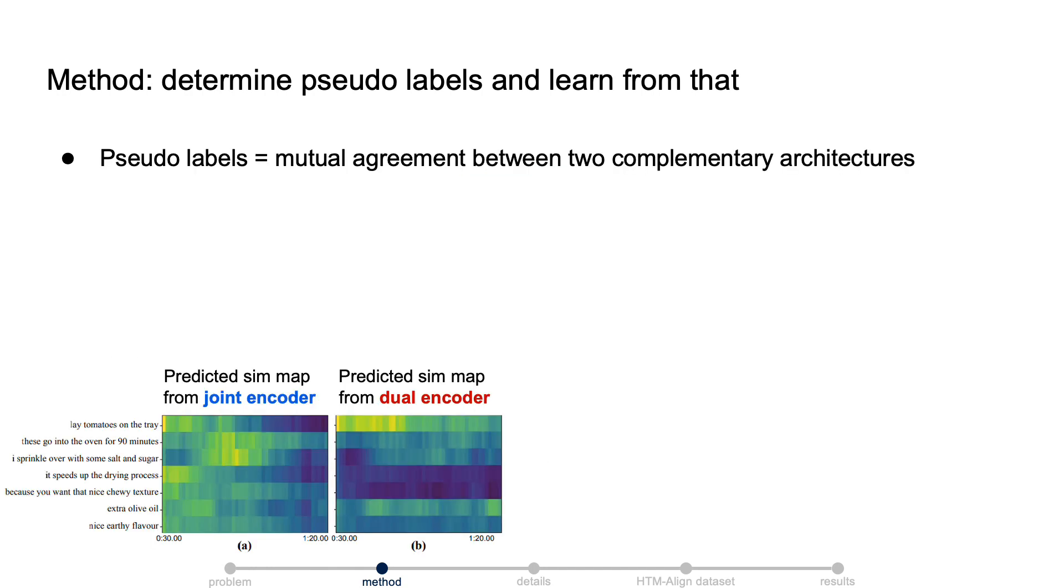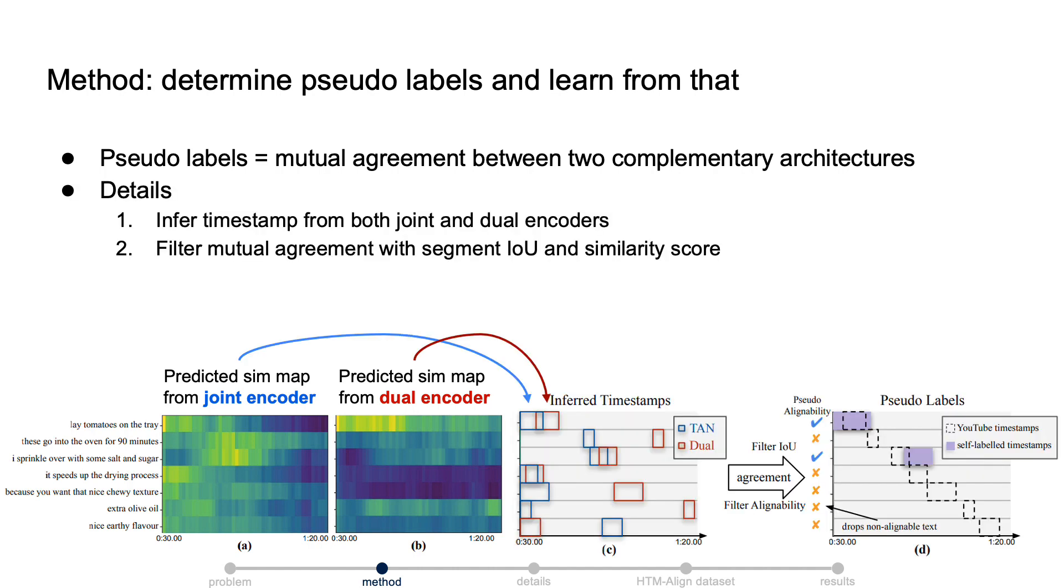We can determine the pseudo-labels from the mutual agreement between these two complementary architectures. In detail, the pseudo-labels are obtained by merging the predicted visual-textual similarity maps from both encoders. We use the pseudo-labels to continue to train the dual encoder and the joint encoder to improve both of them. Note that we use an exponential moving average of the model so the pseudo-labels can slowly update when the encoders get stronger.